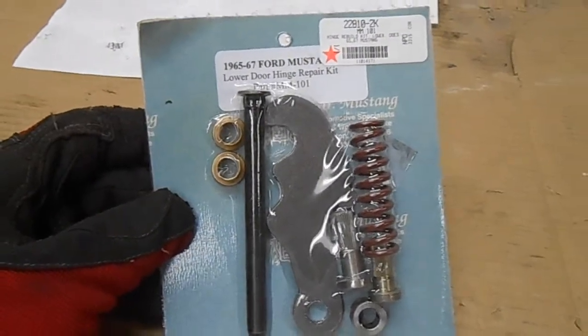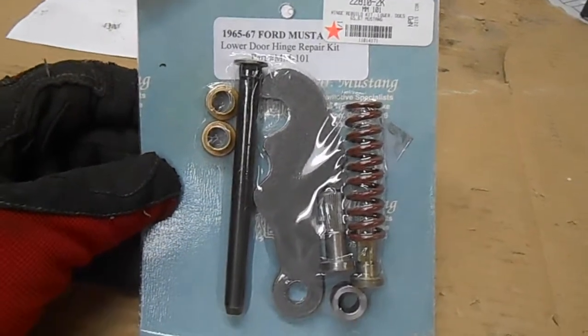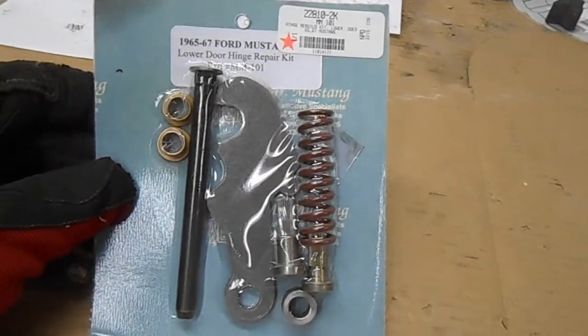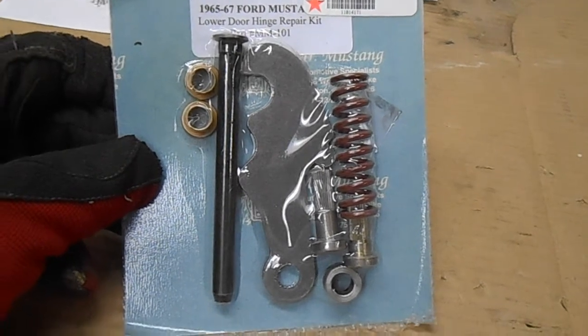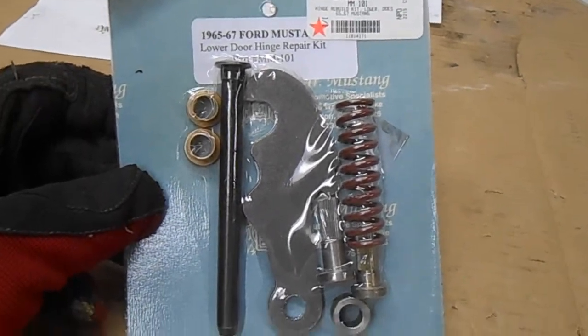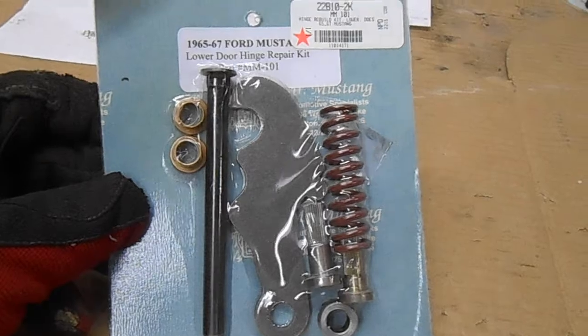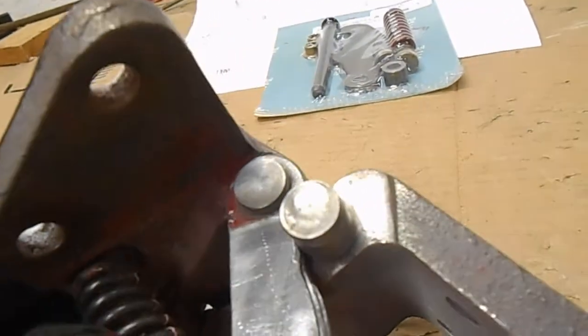It's got the pin and the bushings. It has that lever arm and the roller, the roller that goes around the pin. It has two other pins because there are actually three pins that are pressed into this hinge, and it has this spring. So really the first thing that I need to do is remove this spring.